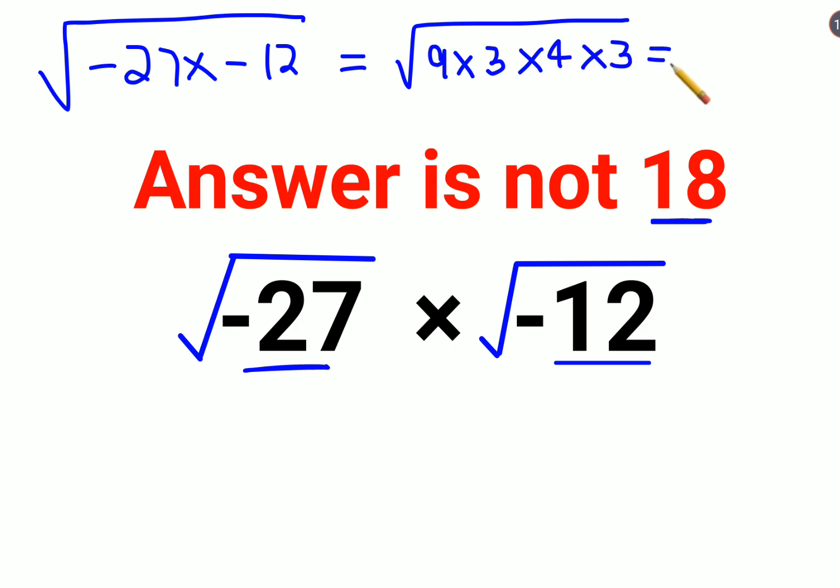This becomes 9 into 3, 3 into 3 gets you again 9 into 4. When you take things out of your root, it becomes 9 into 2, which gets you 18.